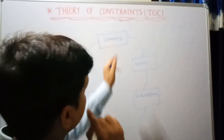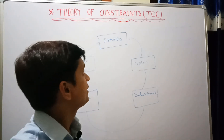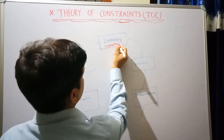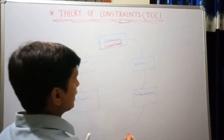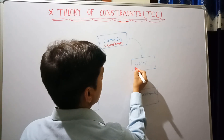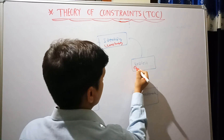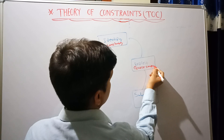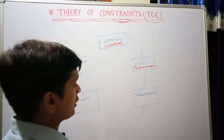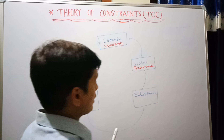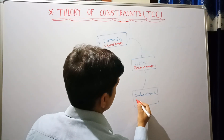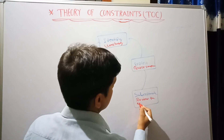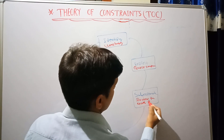The first step is to Identify the constraint in the system. The second step is Exploit, which means quick improvement in the process. The third step is Subordinate, which means review the excess process — review all other activity in the process.